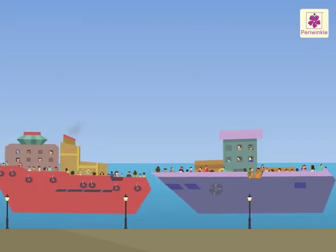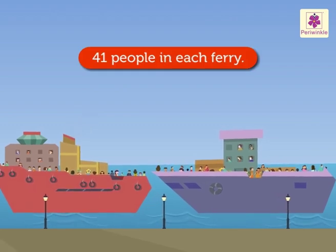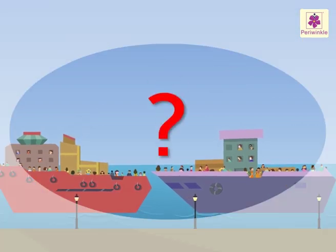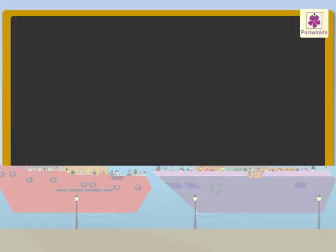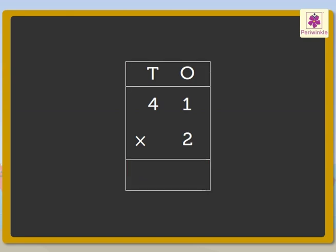Look, there are two ferries. Each ferry carries 41 people. How many passengers do the two ferries carry in all? First, write the numbers in the place value chart. Now multiply the digit in the ones place with the multiplier 2.